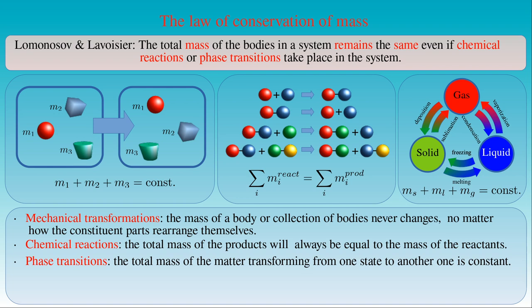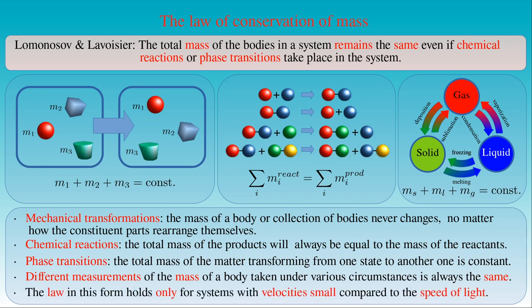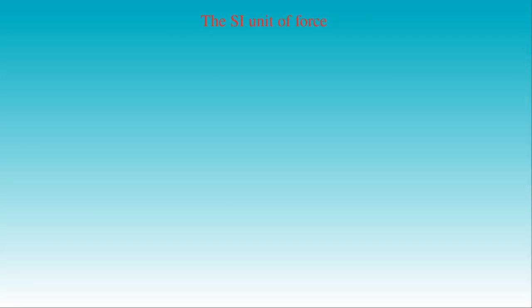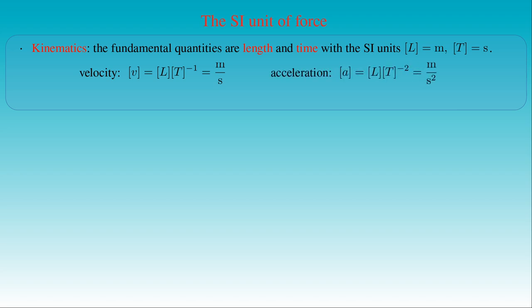Different measurements of the mass of a body taken under various circumstances always yield the same result — that is, the mass of a body or collection of bodies in a system is independent of the state of motion. However, this statement holds only for moving bodies with velocities small compared to the speed of light. After having introduced the SI unit of mass, we can also determine the SI unit of force. In kinematics, length and time are fundamental quantities, with SI units of meter and second respectively. The unit of any derived quantity, such as velocity and acceleration, is also derived from the units of the fundamental quantities.